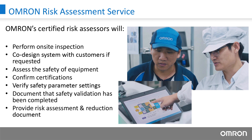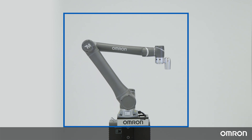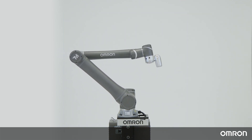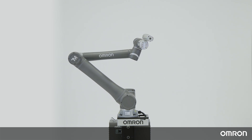OMRON's certified risk assessors will perform an on-site inspection, potentially co-design with customers, to assess the safety of equipment, confirm certifications, verify safety parameter settings, and document that safety validation has been completed. A risk assessment and reduction document will also be provided. This concludes video 2 on collaborative robot safety. We hope that these videos will help you start the implementation of a safe and successful collaborative robot application.